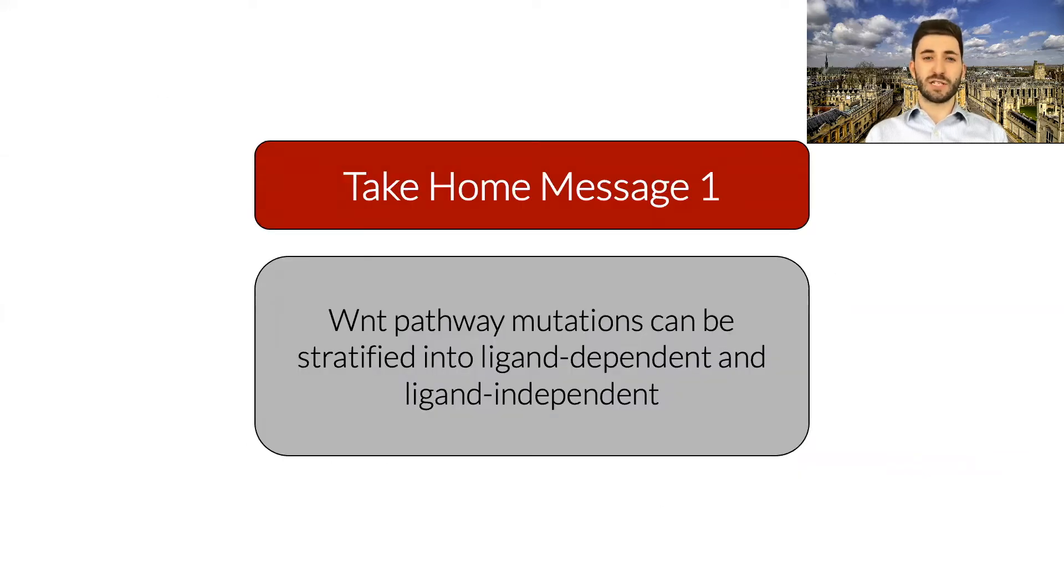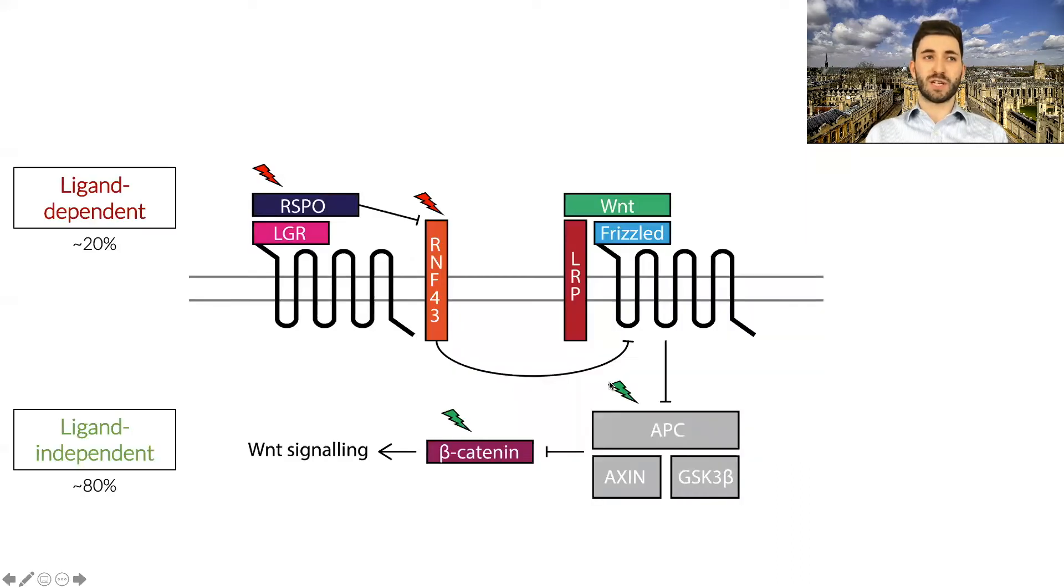The first hypothesis of our project is that we could use mutation status to subdivide colorectal tumours. We know that the majority of tumours in colorectal cancer, approximately 80%, occur in downstream proteins such as APC and beta-catenin. These drive constitutive activation of the pathway that is entirely independent to ligand binding to frizzled receptors. We call these tumours ligand independent.